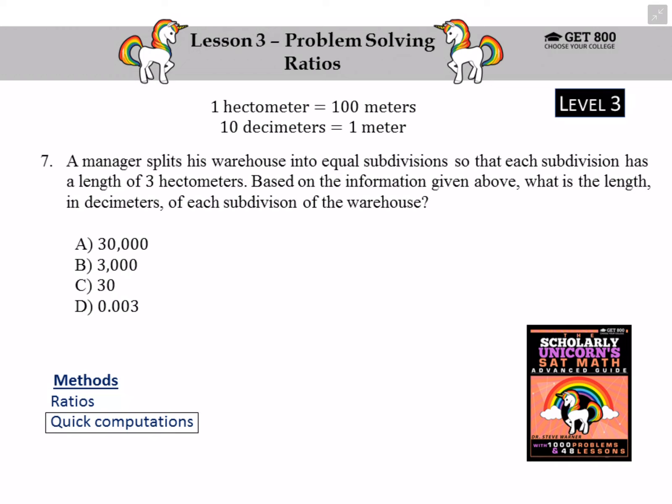First, I'm going to use the fact that 1 hectometer is equal to 100 meters to write that 3 hectometers is equal to 3 times 100, or 300 meters.